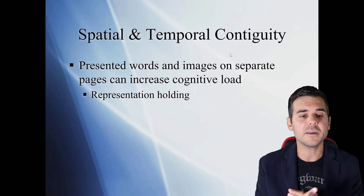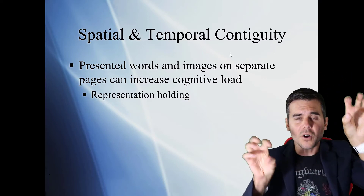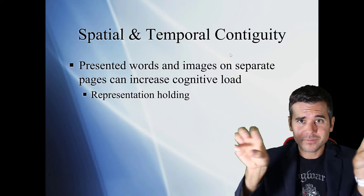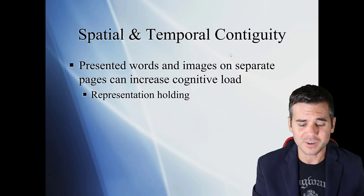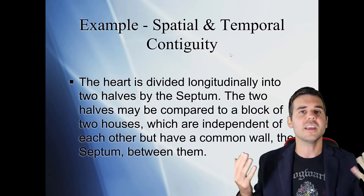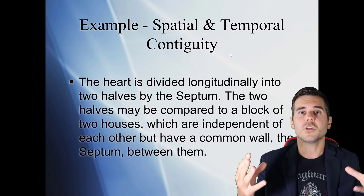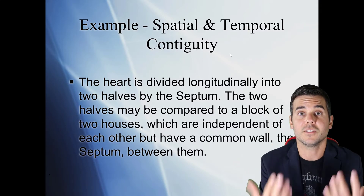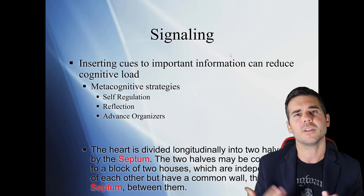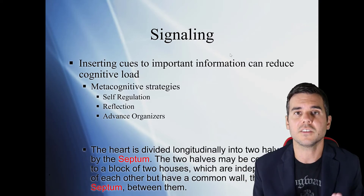Spatial and temporal contiguity basically means that if you have an image and text, they shouldn't be far apart on the screen — they should be close so the learner doesn't have to scan back and forth. Also, they shouldn't be on separate screens; the image and text need to be on the same screen for learners to learn effectively. These are overall general good guidelines for design and development — nothing groundbreaking, but you have to know best practices in order to use them.